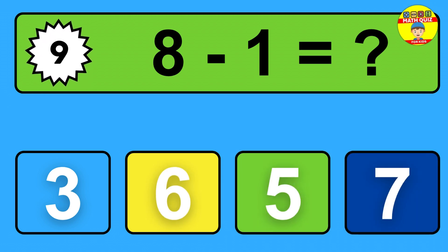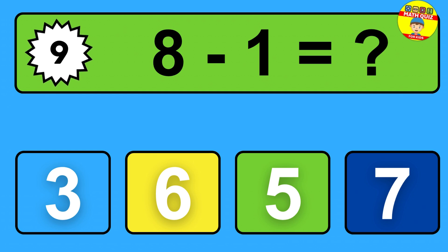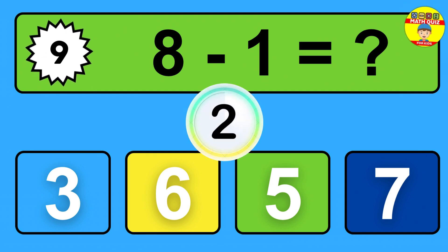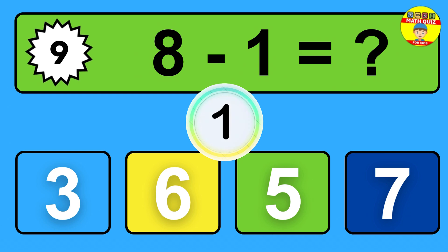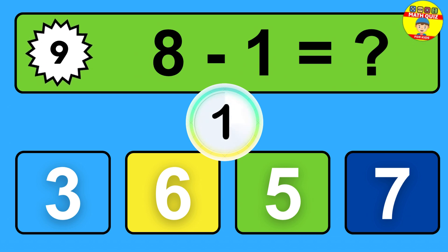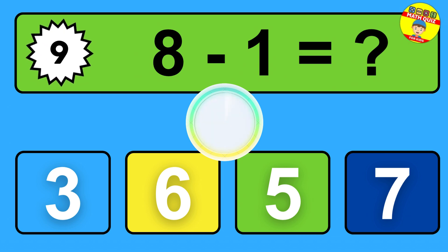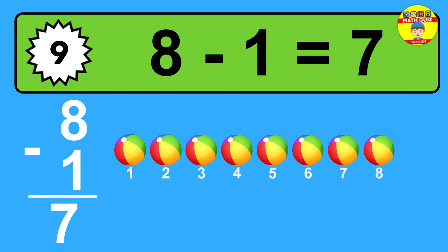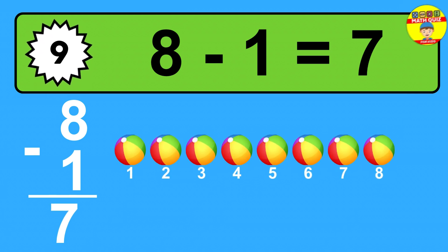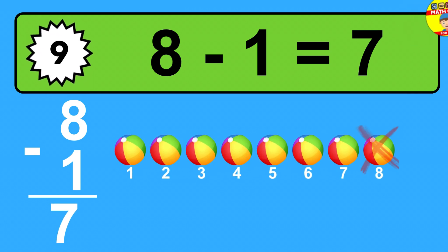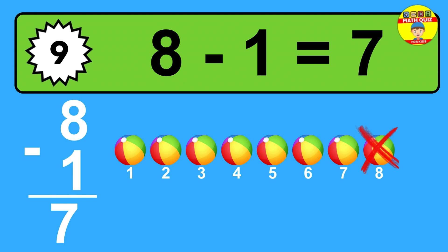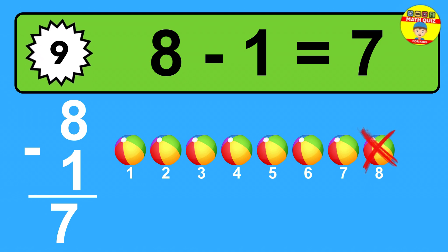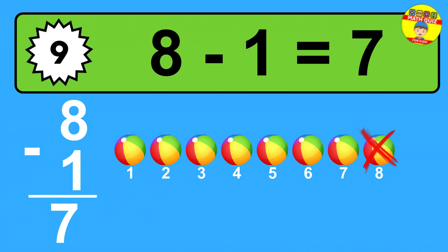Question nine: eight minus one equals what? The answer is eight minus one is seven. Let's count it: one, two, three, four, five, six, seven.